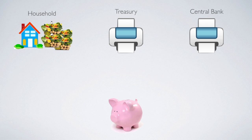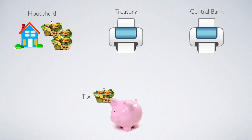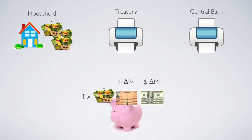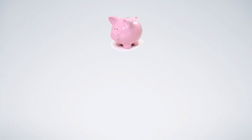In each period, government can tax households, taking away purchasing power of T baskets of commodity from them. At the same time, government can require the treasury to borrow from the public, printing new government bonds to borrow from the public. We use the notation B superscript G to represent government bonds. Delta B^G means the new issuance of government bonds in this period. And at the same time, government can have the central bank print money for it to use, represented by delta M.